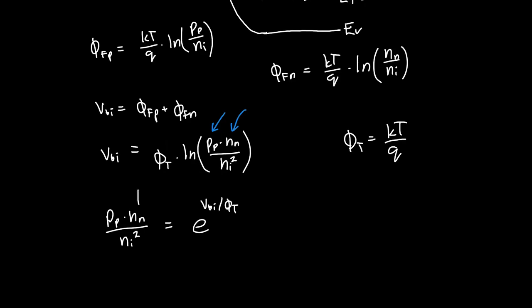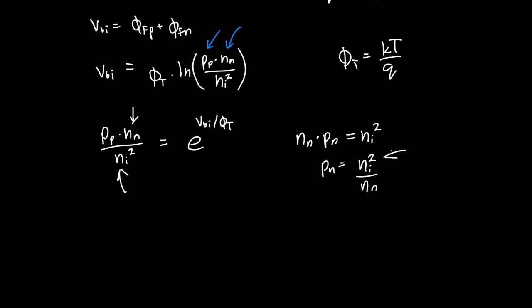We just now need to relate this N on the N-side to P on the N-side. And we know that in general, N times P is just equal to NI squared, or PN is NI squared over NN. So that's exactly what we wanted. This has the quantity that we wanted to substitute. So if we multiply both sides by NI squared over NN and then substitute this in, we see that P on the P-side is equal to P on the N-side times E to the VBI over φT. And this is what we wanted.